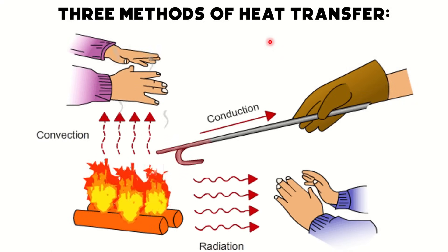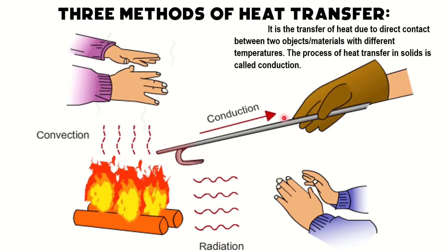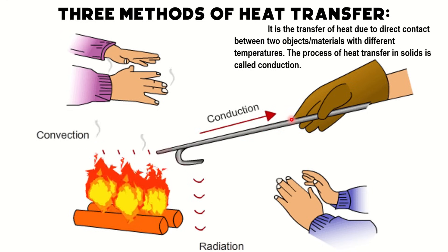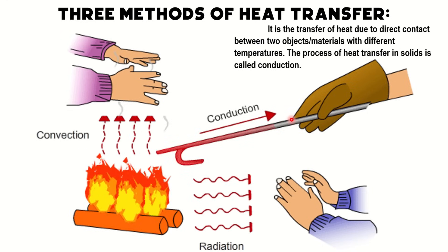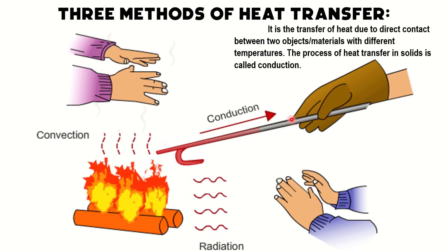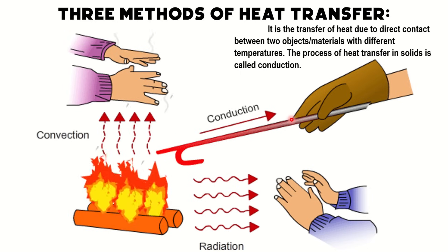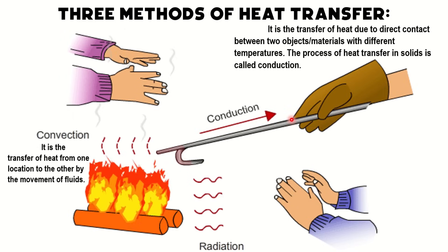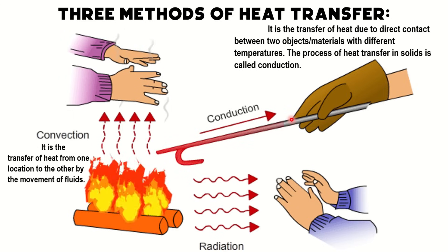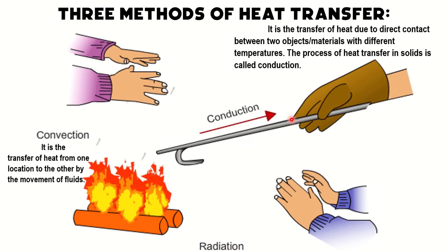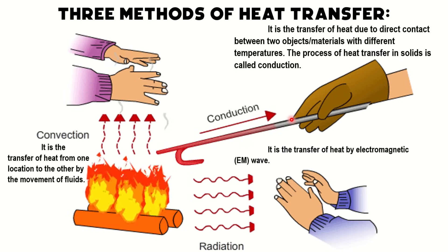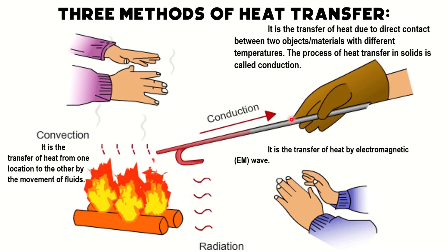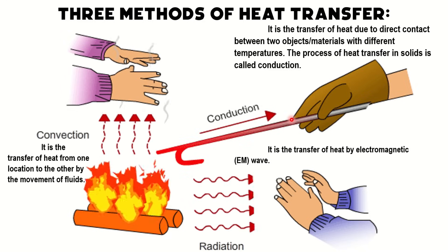There are three methods of heat transfer. The first one is conduction — the transfer of heat due to direct contact between two objects or materials with different temperatures. The process of heat transfer in solids is called conduction; one example is a rod on firewood. The second method is convection — the transfer of heat from one location to another by the movement of fluids; examples are boiling water and steam. The third method is radiation — the transfer of heat by electromagnetic waves; an example is the microwave oven.